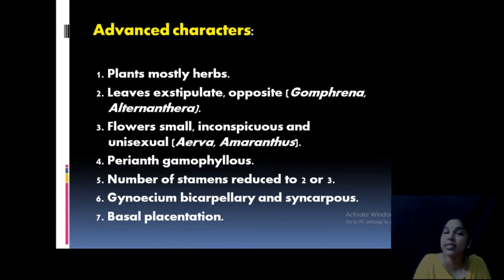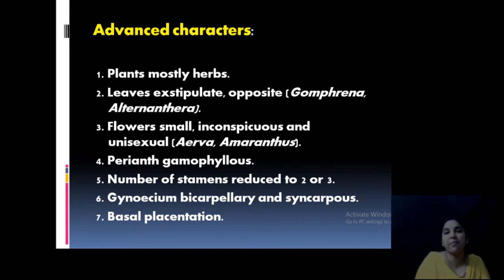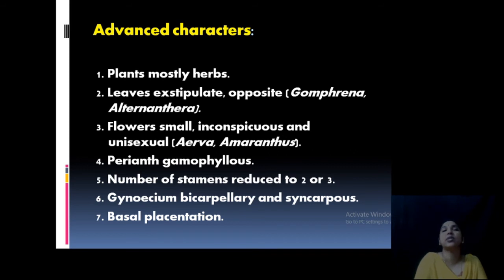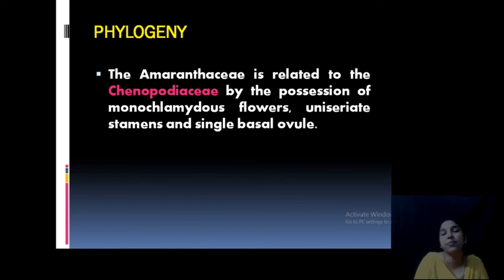The advanced characters of Amaranthaceae include: mainly herbaceous nature, inconspicuous flowers, exstipulate condition, unisexual character, perianth with gamophyllous (united) tepals, reduction in the number of stamens with staminodes usually present, bicarpellary or syncarpous gynoecium, and basal placentation. This family has very close affinity and relationship with the Chenopodiaceae family.